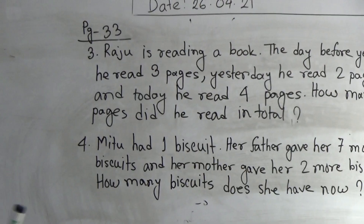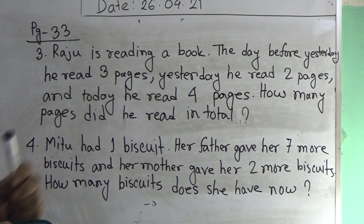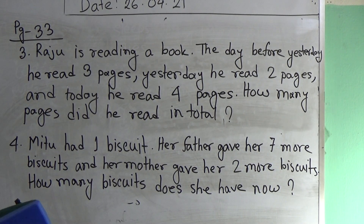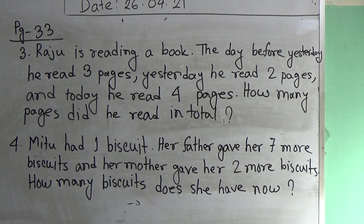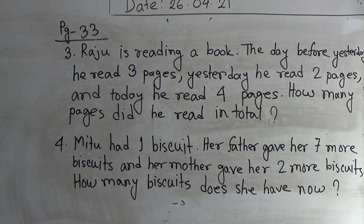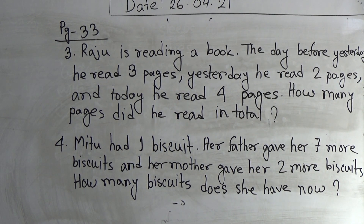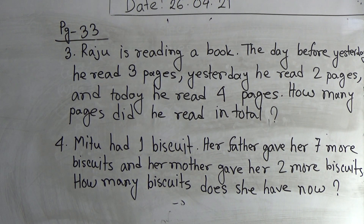Question number 4: Meetu had one biscuit. Her father gave her seven more biscuits and her mother gave her two more biscuits. How many biscuits does she have now? So, Meetu had one biscuit, father gave seven biscuits, and mother gave two biscuits. That means we add one, seven, and two. We do the addition of these three numbers and we get the total number of biscuits.